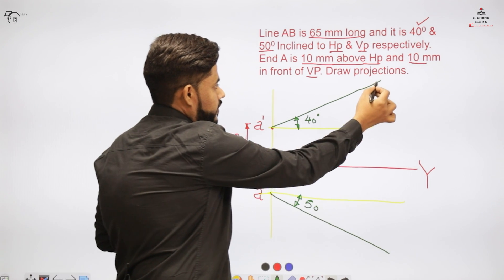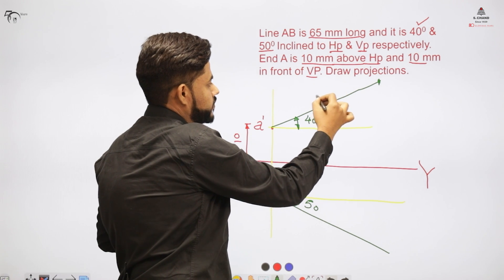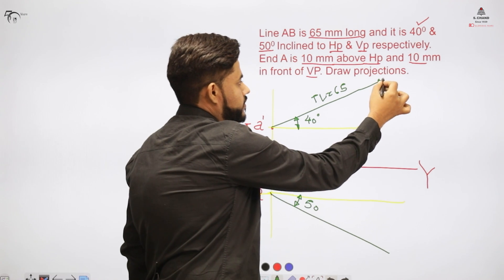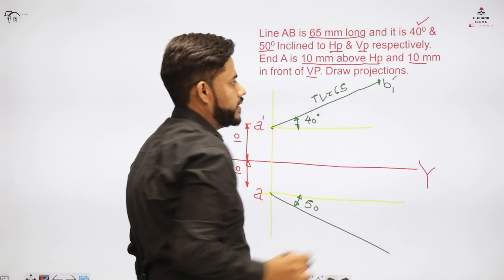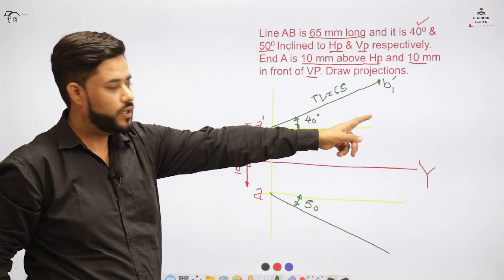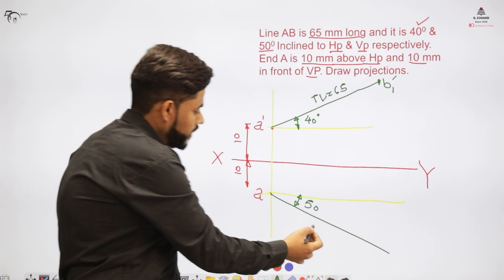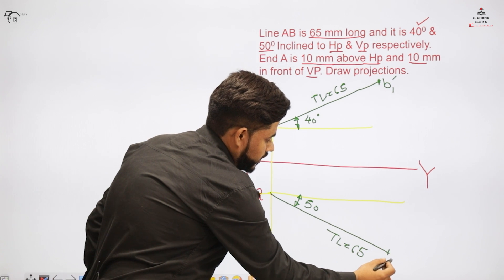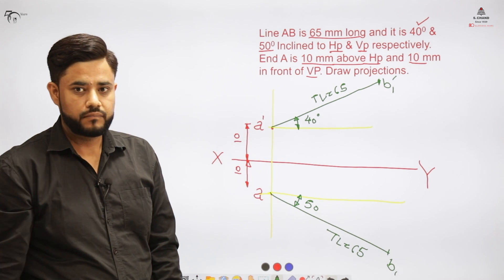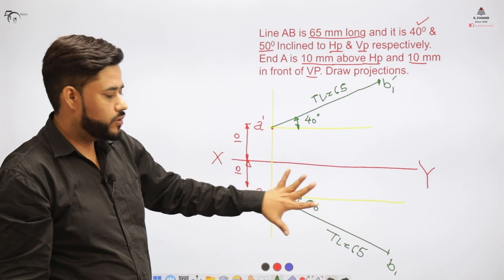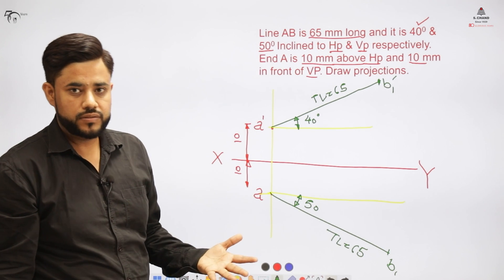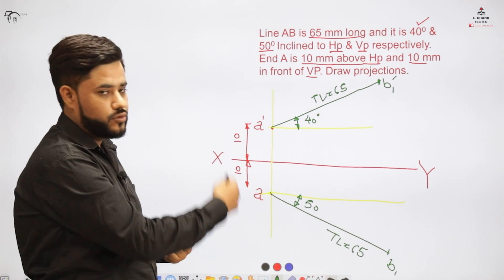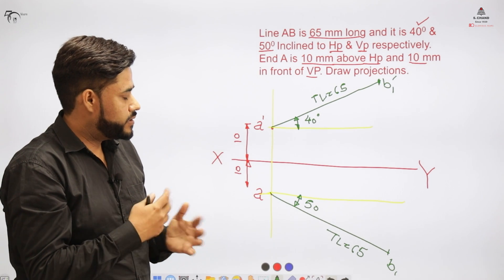I need to cut the distance of 65 mm — this true length is 65 mm only. I need to indicate this point as B1 dash. It is not B dash because this is not the front view — rather this is the true length. Similarly, here I have the 65 mm value and I need to indicate it as B1. This information is now being drawn on the diagram. Now comes the procedure on how to make the front view and the top view when the line is inclined to both the planes.